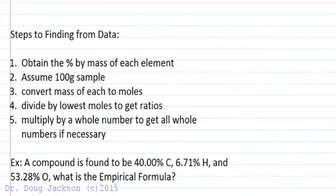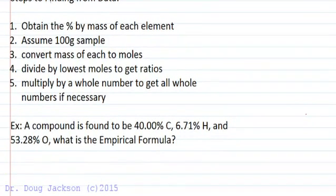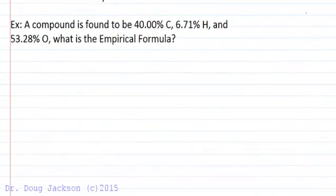Now the steps to finding the empirical formula from data are: obtain the percent by mass of each element from an experiment, in a problem for a test or in the book it's usually given to you; assume a 100 gram sample; then convert these masses to moles; divide by the lowest moles to get ratios; and then if you don't get whole numbers you've got to multiply by a whole number, Dalton's atomic theory at work, to get whole numbers because we can't have half atoms in a compound.